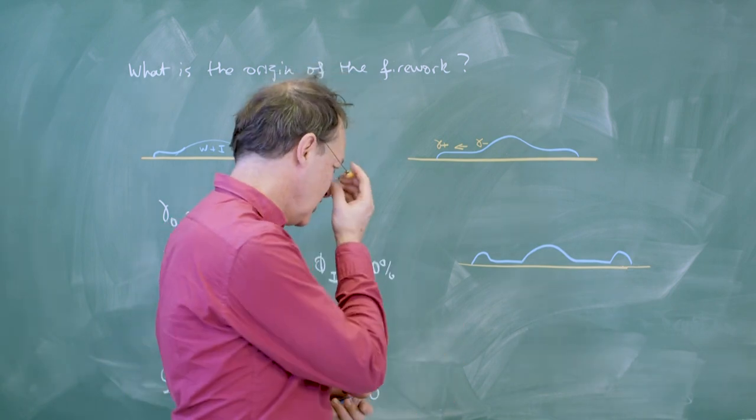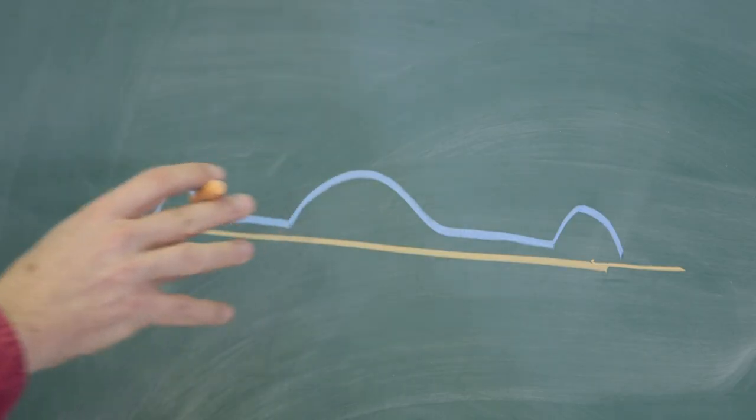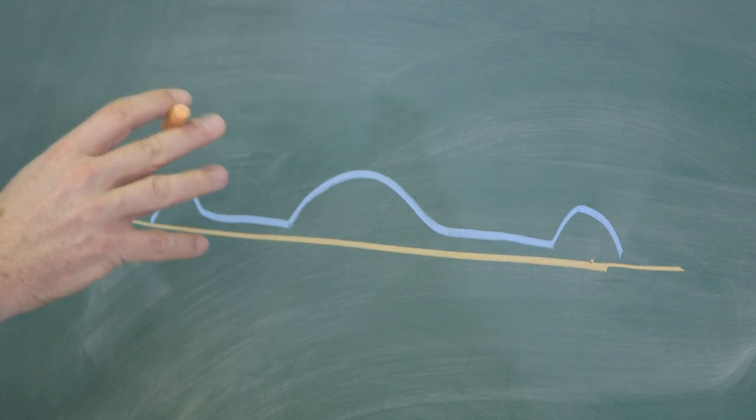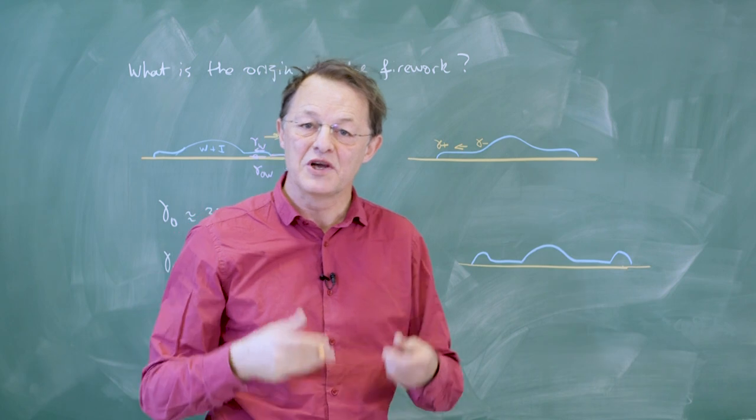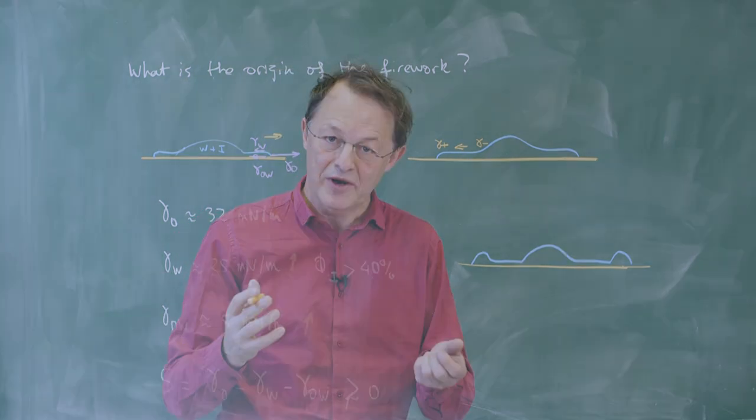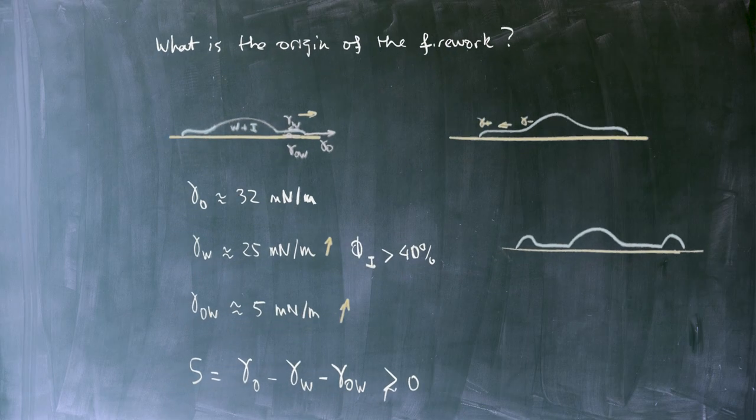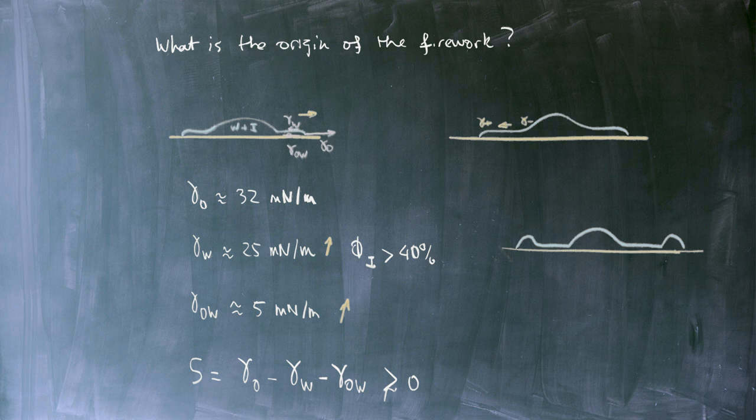And much later, when we have less liquid, when isopropanol evaporated everywhere, we have a global contraction, because now the spreading parameter is negative everywhere. And so we understand qualitatively the origin of this very beautiful phenomenon.